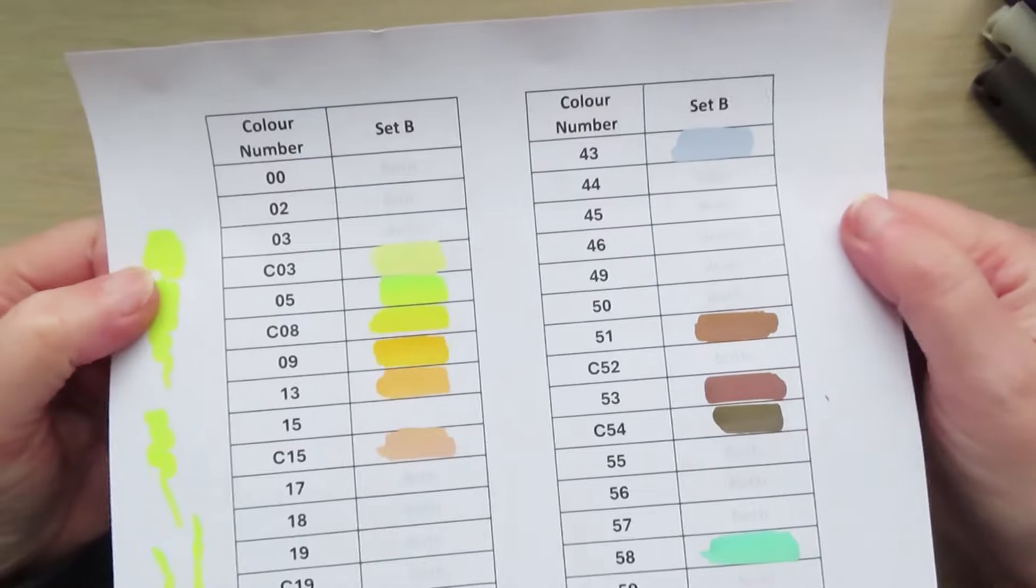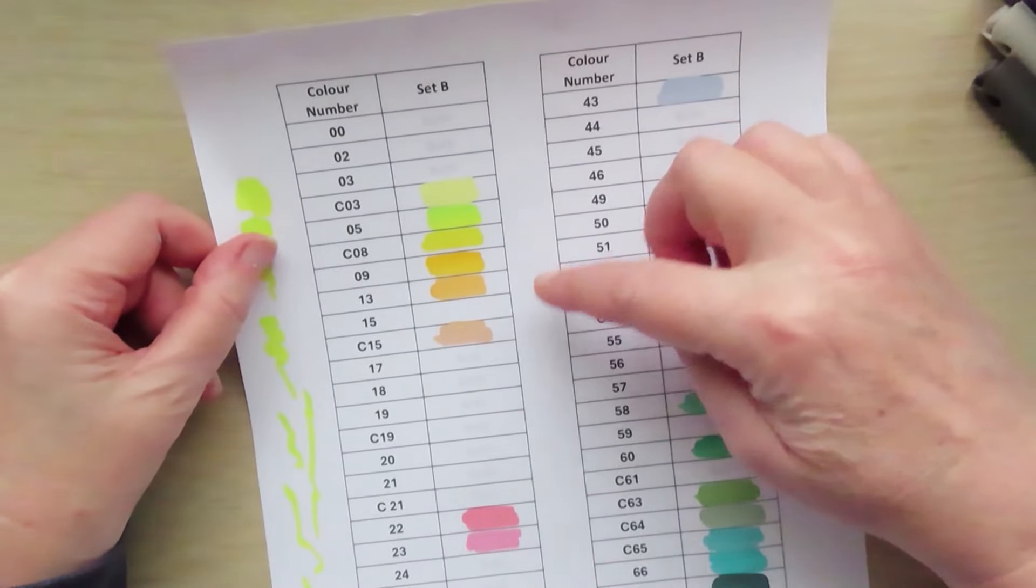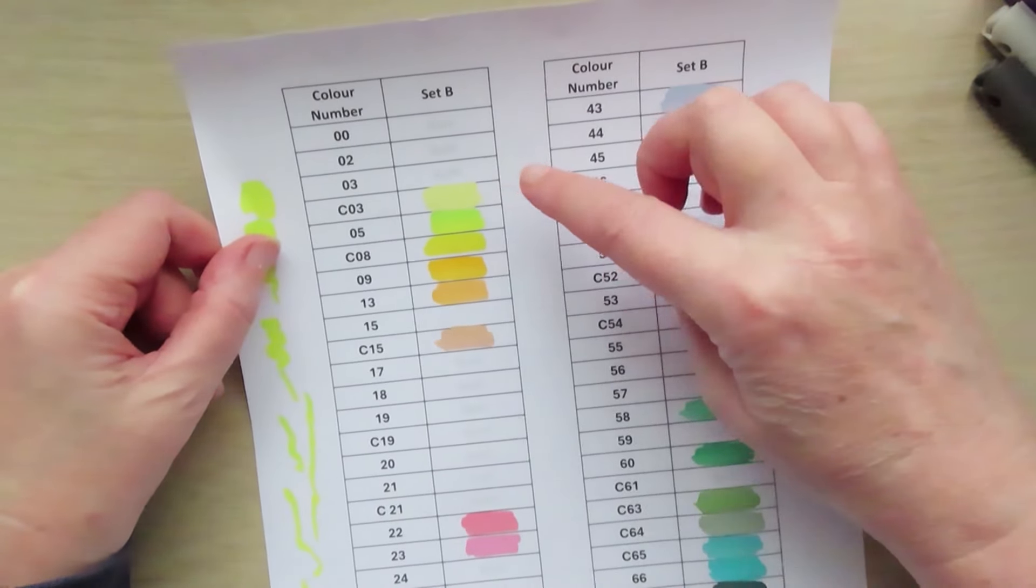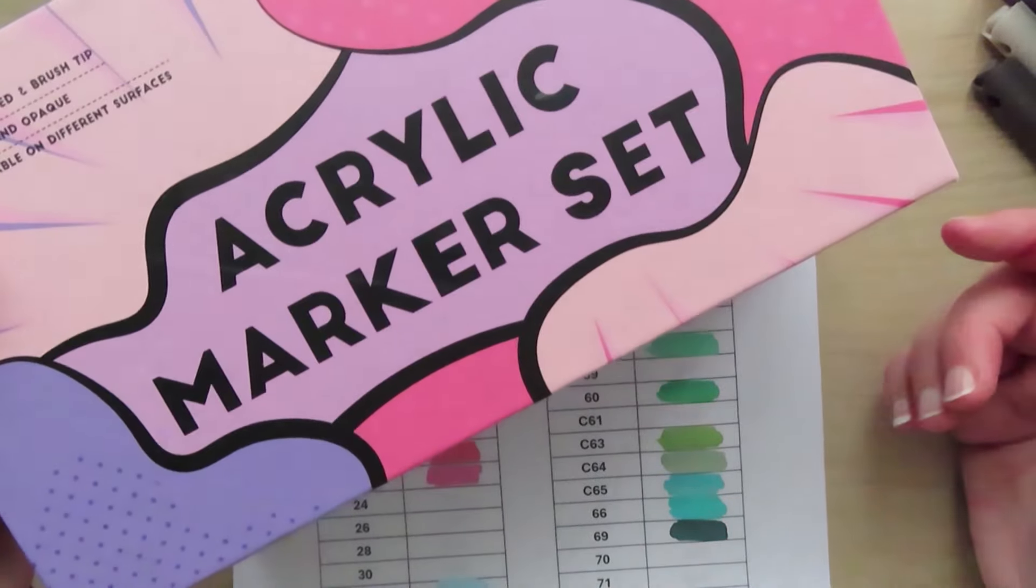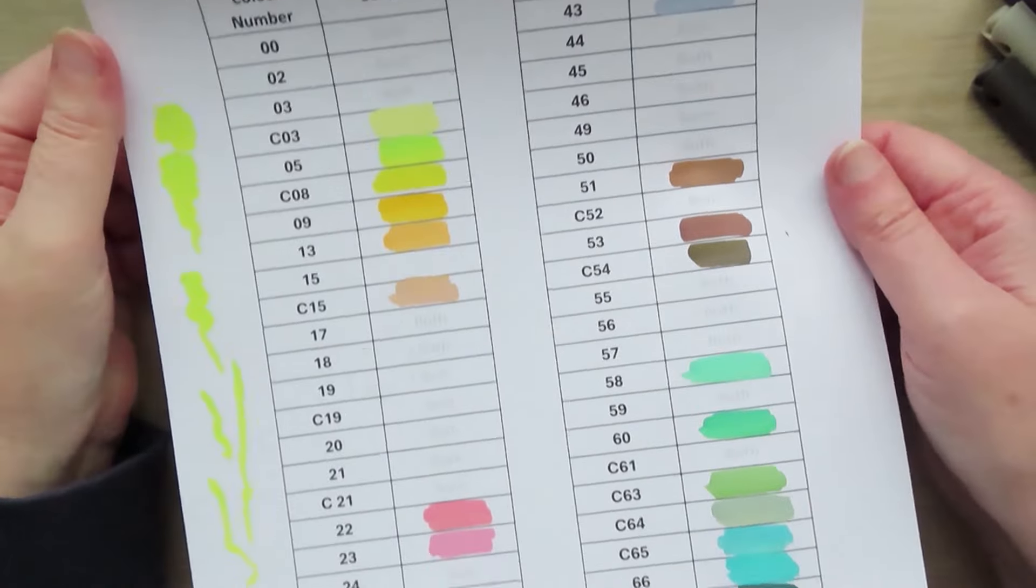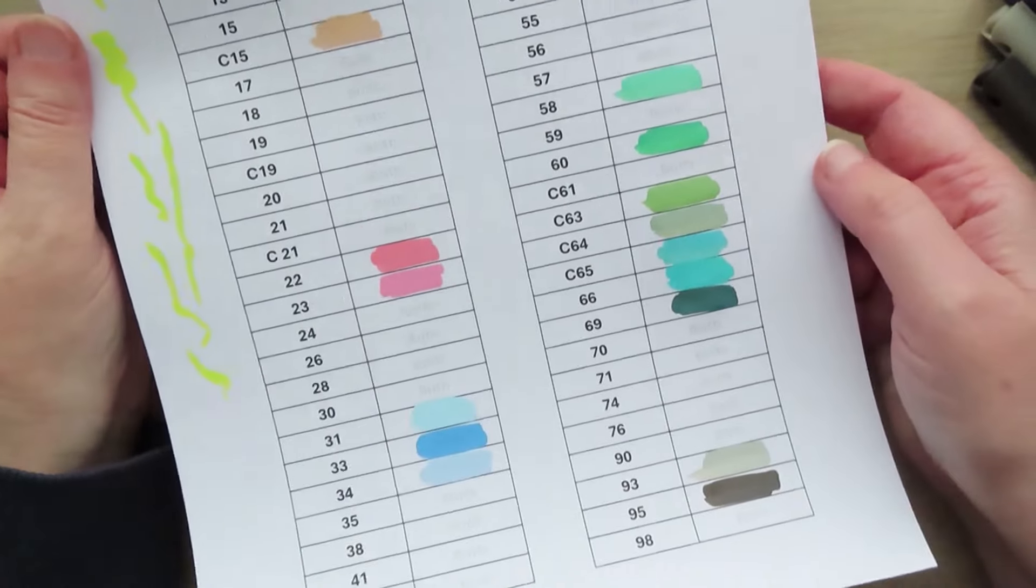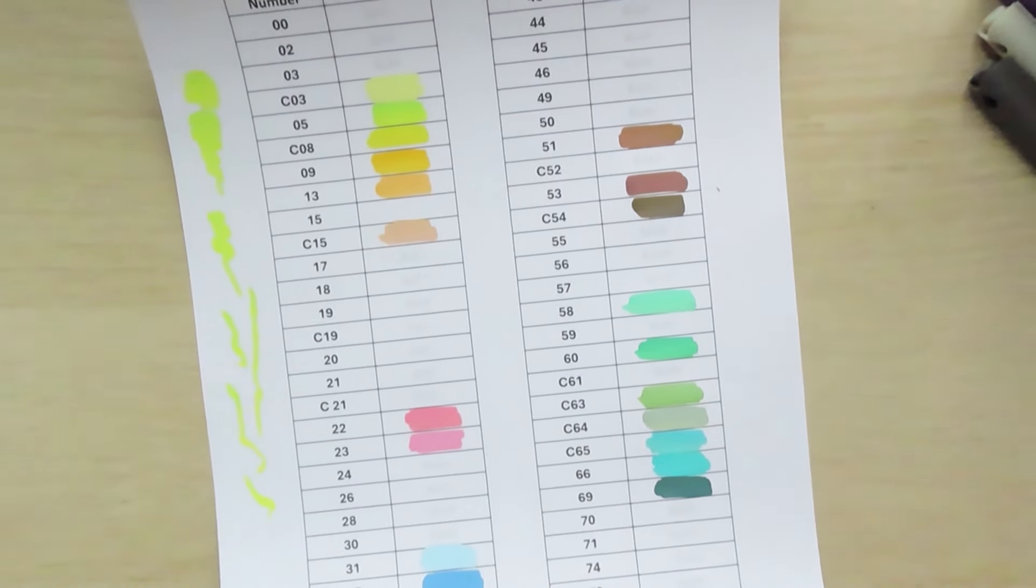There we go. So that's the 24 colors, isn't it? Because one of them, 15, wasn't in there. It's the 24 colors that you get in this set, the pink box set, compared to the blue set. A couple more pinks, a few more greens, a couple more browns. Like I say, I don't know what's in the 90-piece set.